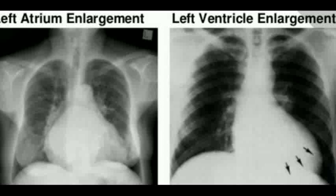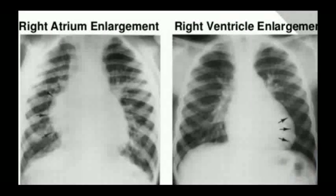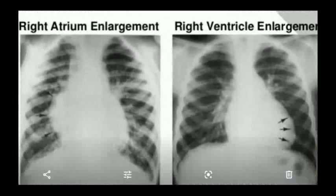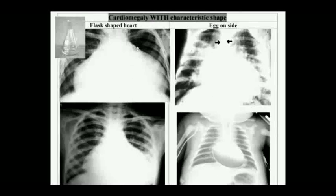Left ventricular enlargement can also be seen in high blood pressure. Then we have right atrium enlargement — right atrium enlargement is the only enlargement present on the right symmetry of the heart. It is seen in tricuspid stenosis and ASD. Then we have right ventricular enlargement, which is seen in tetralogy of Fallot. This involvement resembles a boot of a kid, also known as boot-shaped heart.